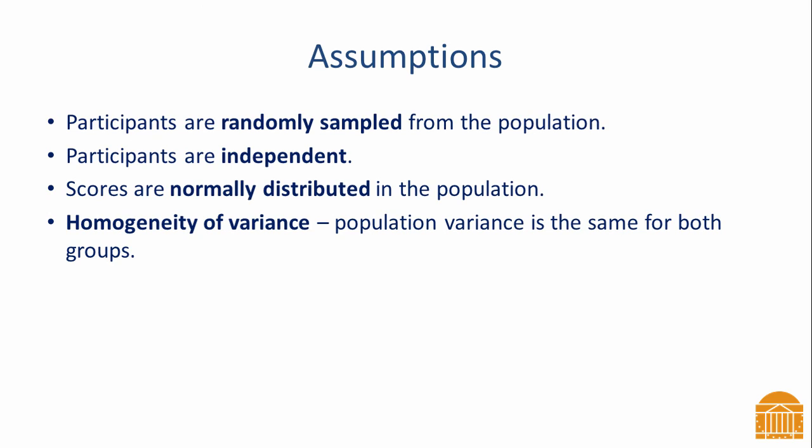The last assumption is homogeneity of variance, meaning the variance is the same in each population distribution. This assumption is needed to compute the t-test with the pooled variance. If homogeneity of variance is violated, we can still compute the t-statistic but use a different method and adjust the degrees of freedom. This alternative method is done by most statistical software and is referred to as Welch's t-test, which does not require the assumption of equal variances.